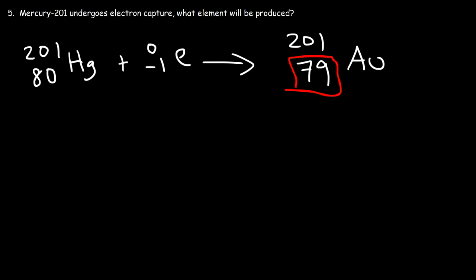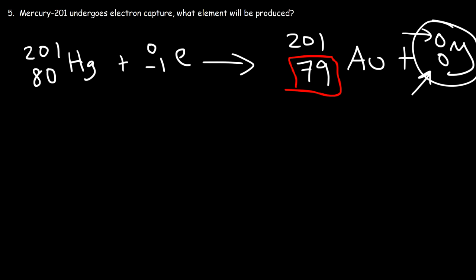During electron capture, the nucleus also emits gamma radiation. This does not affect the mass or the charge in the equation. But typically, whenever you have a radioactive decay, energy is usually emitted in the form of gamma radiation — something to keep in mind.